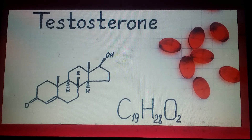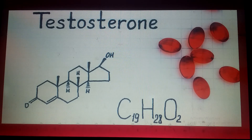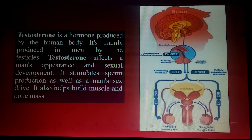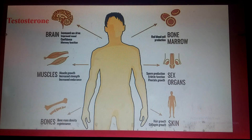Testosterone is the male sex hormone. As you can see here, its structure consists of four rings, and its chemical formula is C19H28O2. Testosterone is a hormone produced mainly by the testicles in men. It affects male appearance and sexual development, stimulates sperm production and sex drive, and also helps build muscle and bone mass.